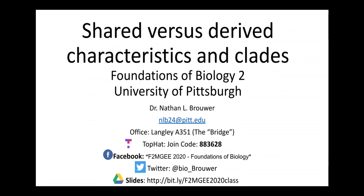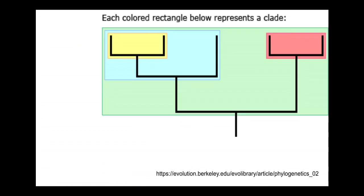In this video I want to talk about how we define clades and the role of shared derived characteristics, or apomorphies, in defining clades. Clades are groups of taxa — tips of trees — that share a node, share a common ancestor. On this tree we have a clade right here; these two tips share a node. Here is another clade with two taxa — one tip here, one tip here, a node here.